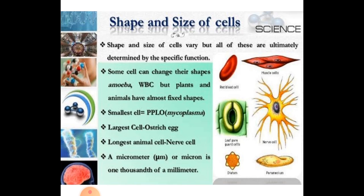The shape and size of cells vary, but all of them are ultimately determined by their specific function. Some cells can change their shape — for example, amoeba and WBCs — but plants and animals have almost fixed shapes. Amoeba is a unicellular organism that changes its shape, but in humans and plants, the shape is usually fixed.